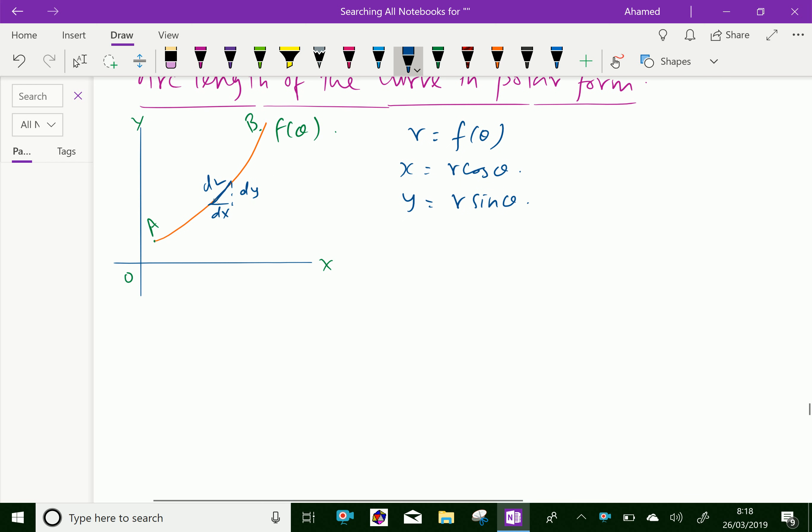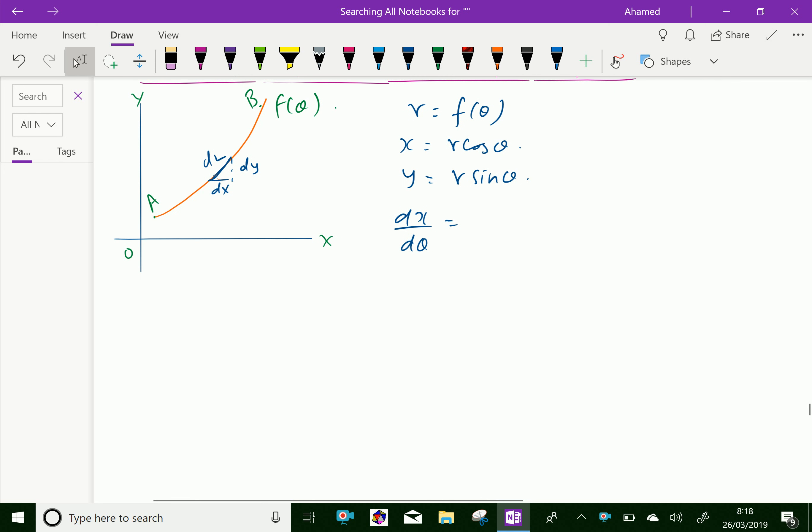Now differentiate. The differentiation of x is dX by d theta. By UV rule, differentiate x equals r cos theta. That is r dash (which represents dR by d theta) cos theta minus r sine theta, because cos theta differentiation is minus sine theta.